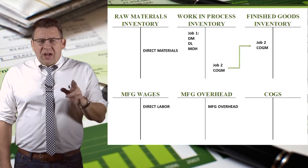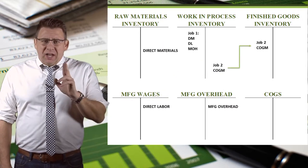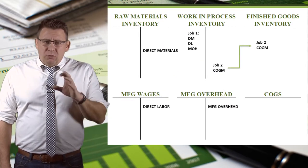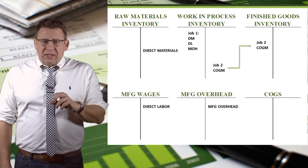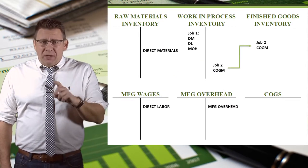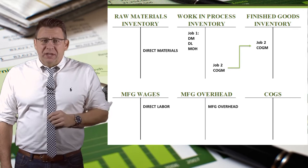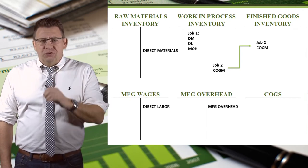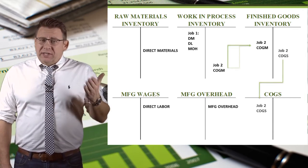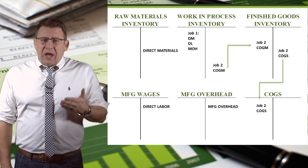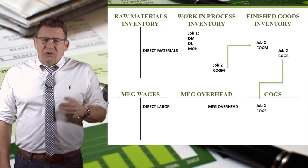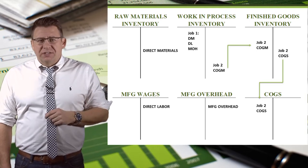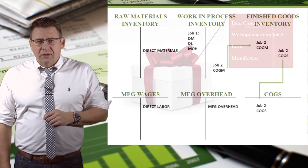The costs remain grouped in work in process by job until they are completed. Then they are transferred to finished goods inventory. When sold, the job costs are transferred to costs of goods sold.